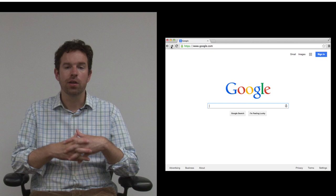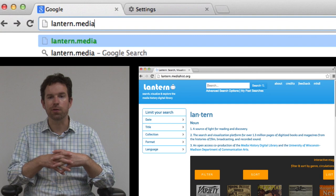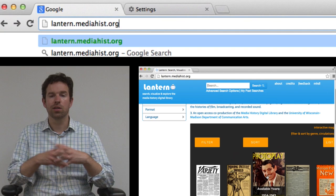So what do you do with all that material? You can try to read it in a linear way and move through it using the book reader, sort of the magazine experience, but on the web. You can also search it using our search engine, Lantern, which you can check out for yourself, Lantern.MediaHist.org.